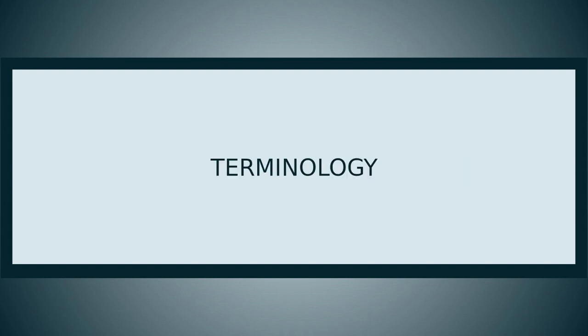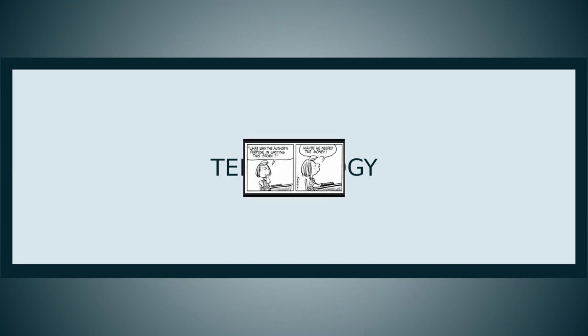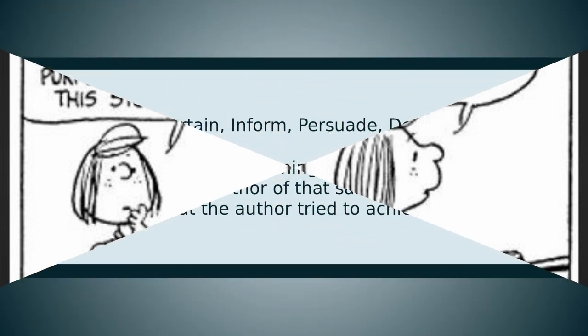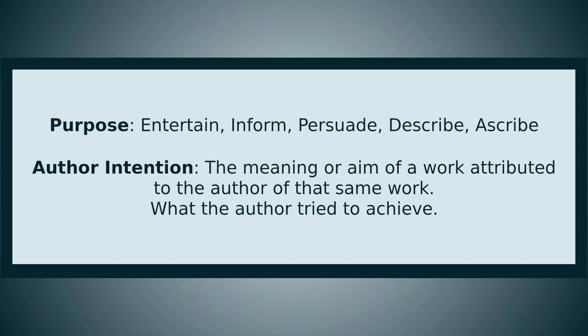We need to clear up the difference between author intentions and the author's purpose. There are five different purposes that an author may use in writing. The author may be trying to entertain, inform, persuade, describe, or finally ascribe — to give credit to somebody for something. Those are the purposes, and that's not what we're talking about when we're discussing author intentions.